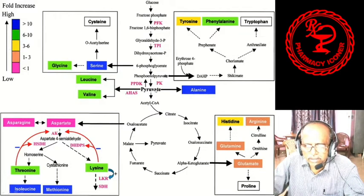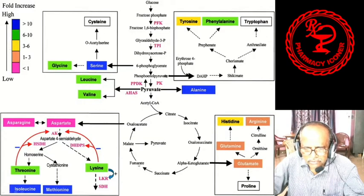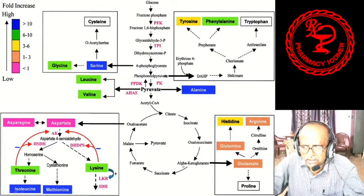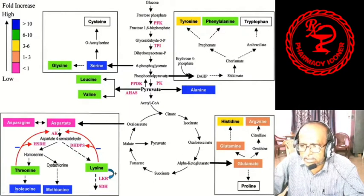Pyruvic acid, with the help of acetyl coenzyme A, enters the citric acid cycle — also known as the TCA cycle or Krebs cycle. The cycle proceeds: pyruvate → citrate → isocitrate → oxalosuccinate → alpha-ketoglutarate → succinate → fumarate → malate → oxaloacetate. From alpha-ketoglutarate, glutamate is formed. From glutamate, glutamine is formed, and glutamine converts to histidine. From glutamate, ornithine, citrulline, and arginine are also produced, as well as proline.